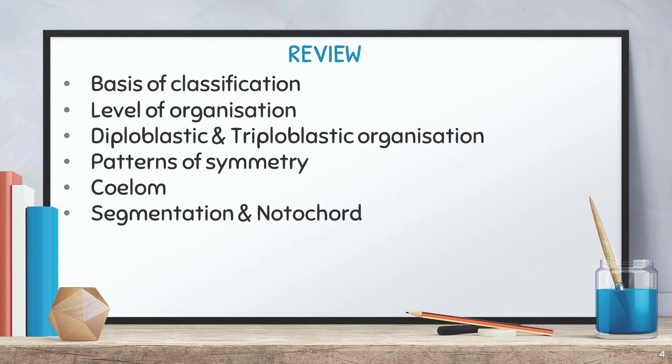The third character is coelom, which is a cavity. There are three kinds of coelom: acoelomate, pseudocoelomate, and eucoelomate. Eucoelomate is further classified as schizocoelomate and enterocoelomate. Then segmentation — the repeated segment is called metamerism. Based on the presence of notochord, organisms are classified as vertebrates and invertebrates, or chordates and non-chordates.